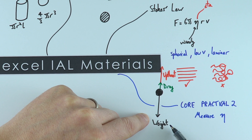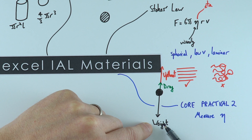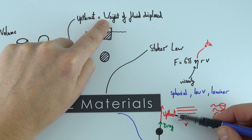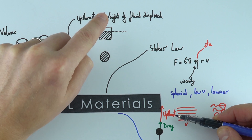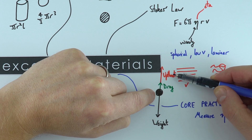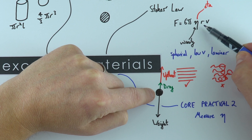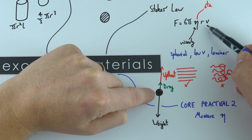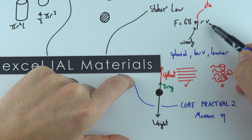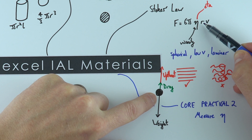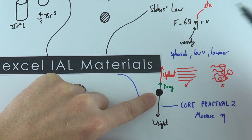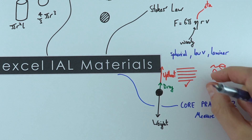We can calculate the weight from mass times gravitational field strength (W = mg). The upthrust equals the weight of fluid displaced, calculated from the volume of the object and the density of the liquid. The drag force equals 6πηrv. We can record velocity by measuring the time to travel a certain distance, and we know the radius r, so the unknown is viscosity η, which can be calculated from dropping ball bearings through the viscous fluid.